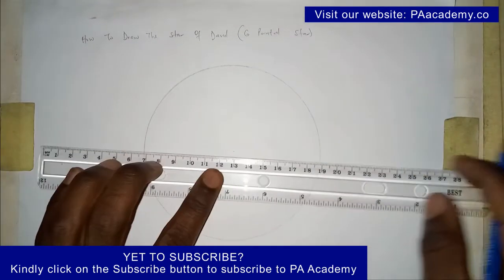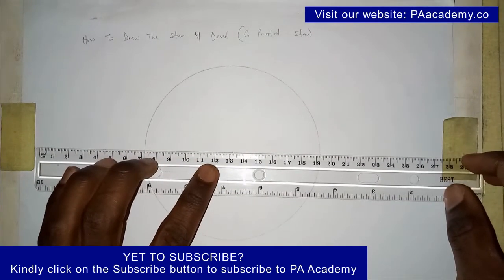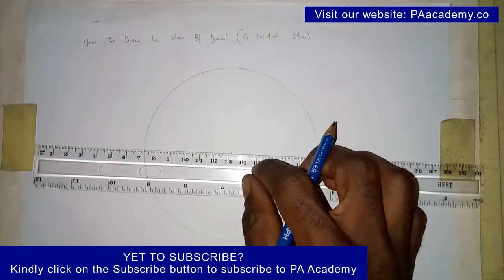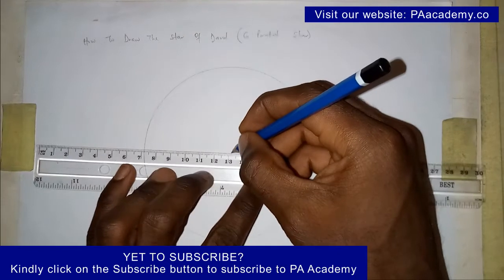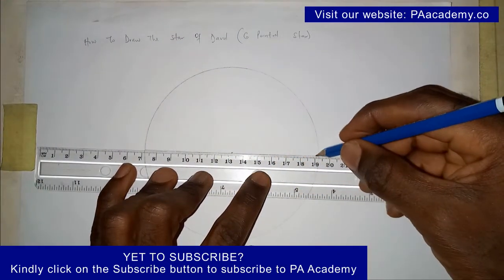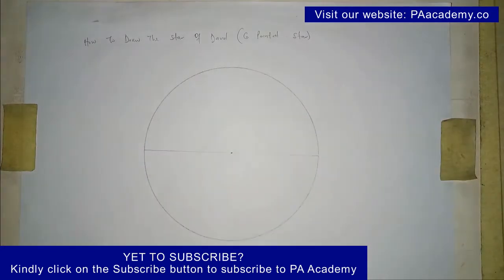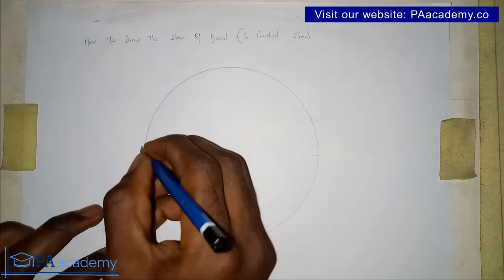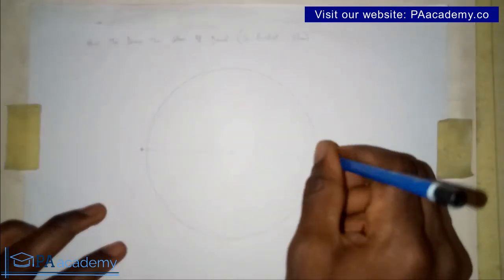The next thing to do is to draw the diameter. Let me draw the diameter. Make sure to draw a faint line. Here the diameter is touching the circumference of the circle, so you notice those points. This is point A, and let's call this point B.